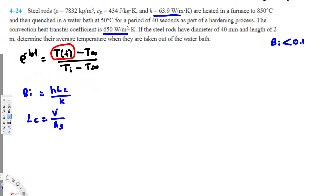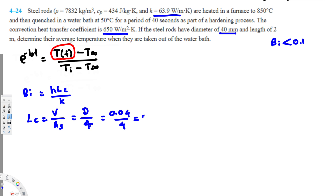Since the steel rod has a cylindrical shape, the ratio of volume to surface area simplifies to d/4. If you plug in the cylinder volume formula (π·d²/4·L) and surface area, and solve, you get d over 4. We know the diameter is 4 millimeters, which is 0.004 meters. So Lc = 0.004 / 4 = 0.001 meters. Wait — the diameter is 4 mm = 0.004 m, giving Lc = 0.001 m. Now we have the characteristic length and can find the Biot number.